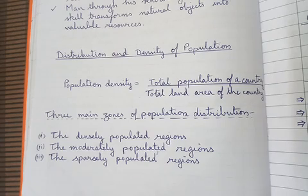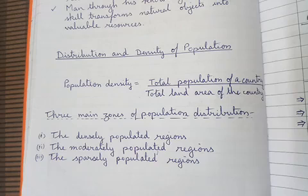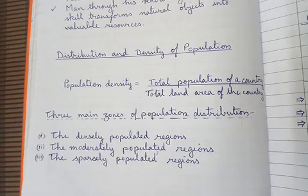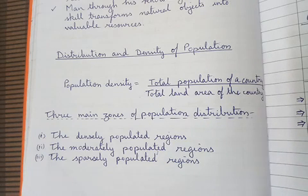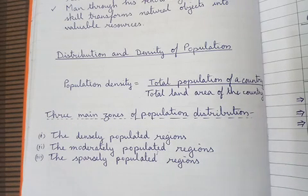All these areas have very, very sparse populations. Some more examples are the cold polar regions — the whole Arctic region in the north — and Antarctica.